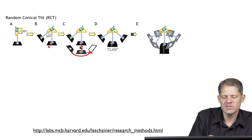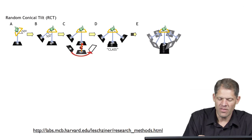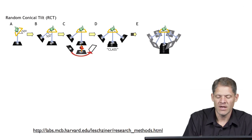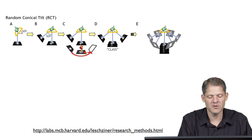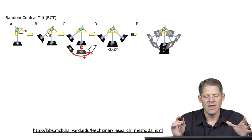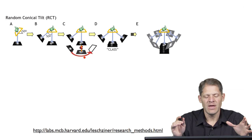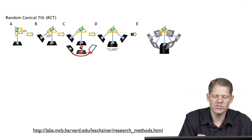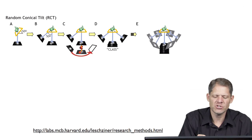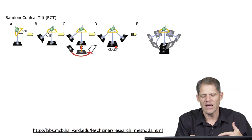You take the whole set of particles from the untilted images and classify them. Suppose this is a single picture in the untilted orientation of one particle, and this is a picture of a second particle in the untilted orientation. You may have thousands of pictures like this, but right now we're just considering two of them. From those images you classify them and find sets of particles that are all presenting the same view, except they may be related to each other by a simple in-plane rotation. If you take this set of particles presenting the same view and align them by their in-plane rotation, you can consider them a class.